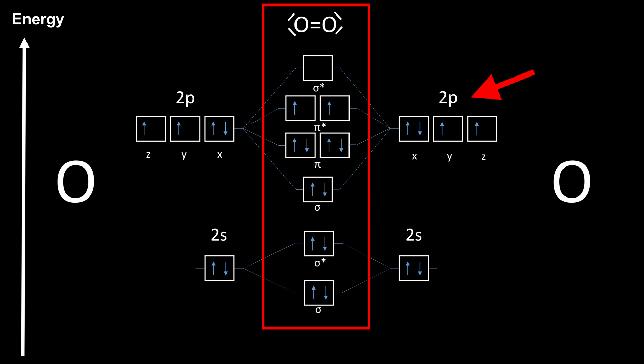This is why the p orbitals are more interesting. The bonding sigma orbital has two electrons, while the antibonding orbital is empty, so a sigma bond is present.